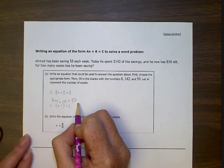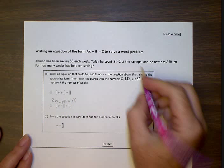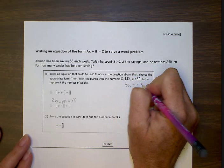And so now that we have an equation, we can try to solve the equation. So let's write it again over here. 8W subtract 142 equals 50.